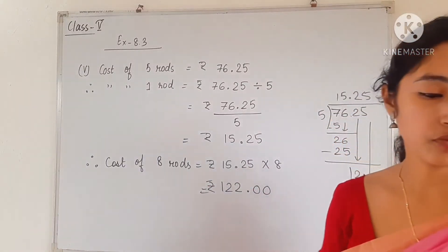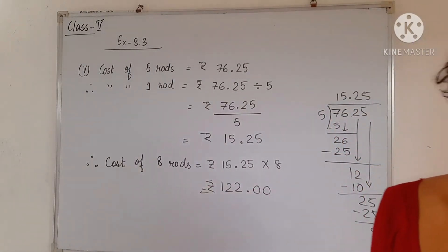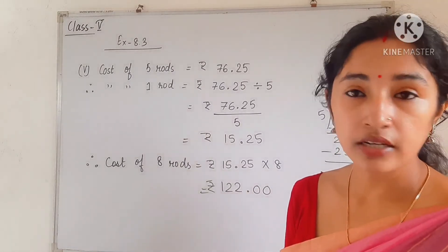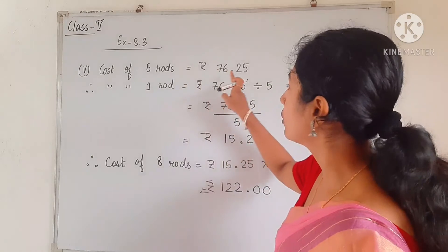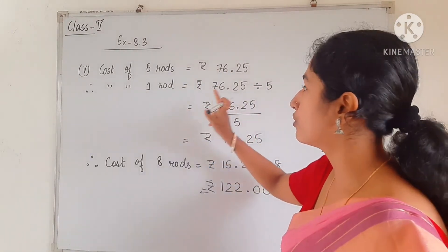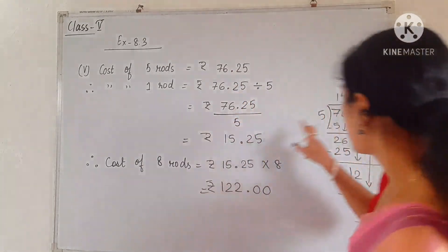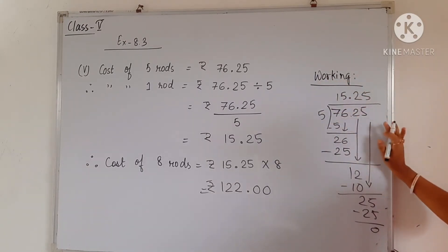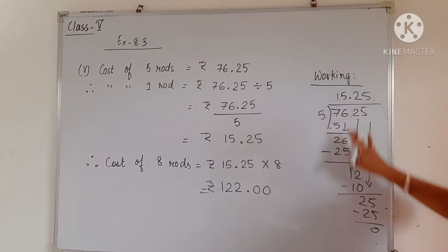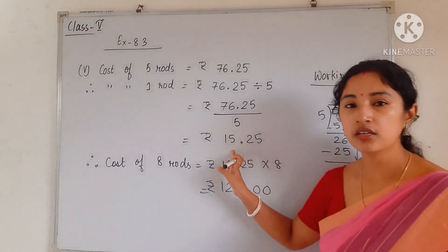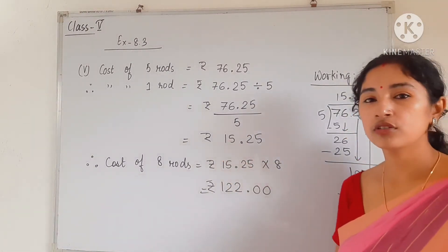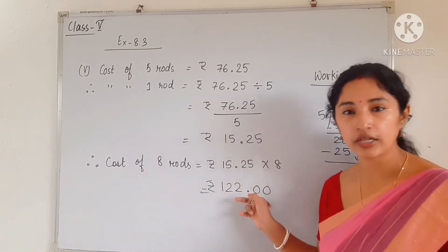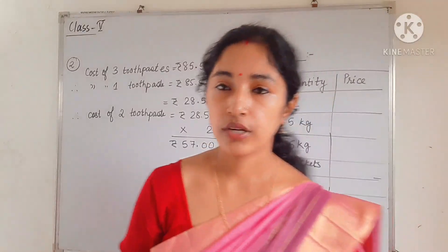For homework: the cost of 3 gums is given, and the cost of 1 key is given as rupees 12. The last item is the rod — cost of 5 rods is rupees 76.25. Dividing by 5, the cost of 1 rod is rupees 15.25. Therefore, the cost of 8 rods will be rupees 122.